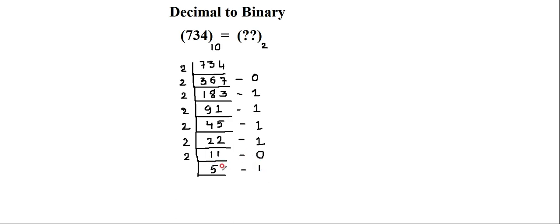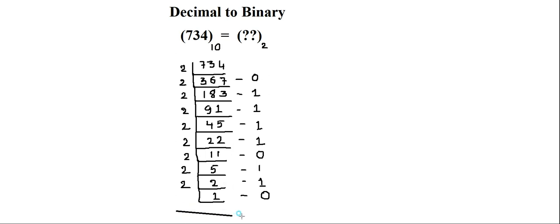Divide the next number by 2: 2×2 is 4, remainder is 1. Then divide one more time by 2: 2×1 is 2, remainder is 0. So the quotient becomes 1, and this is the final step. The final number in binary is now ready to read.